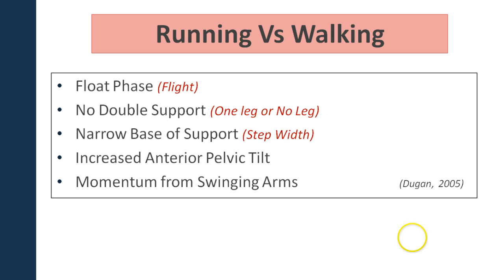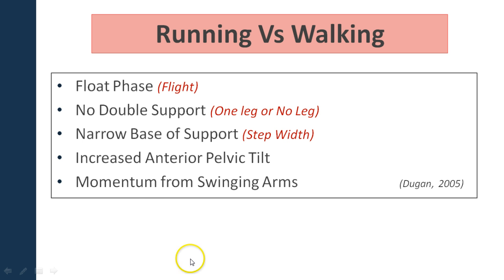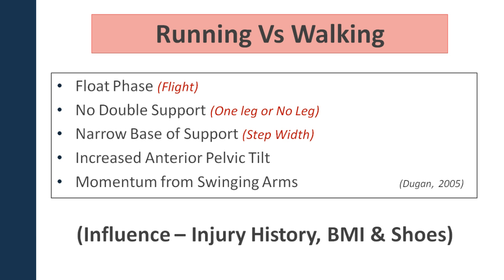Another key difference is step width. Generally when you're walking you have a wider step width, and when you start running it becomes narrower. The anterior pelvic tilt is also increased. When you're walking the momentum comes from the stance leg, whereas when you're running the momentum comes from the swing arms. Injury, body weight fluctuation, and footwear can all influence your running style.